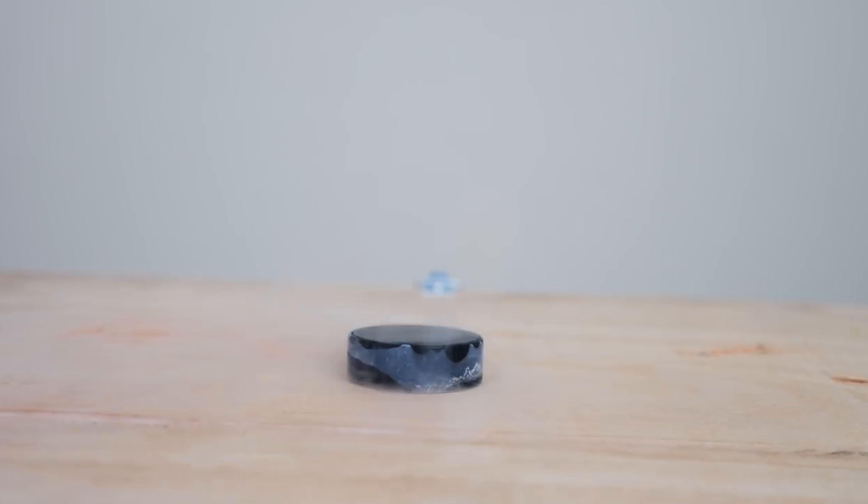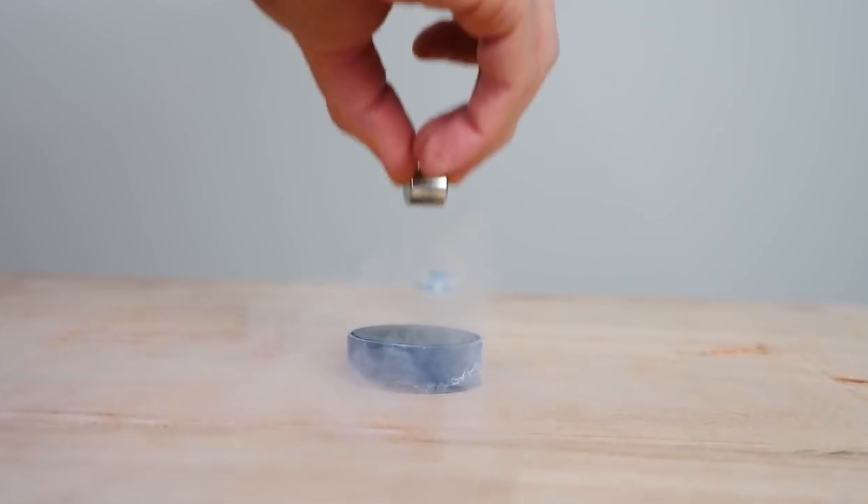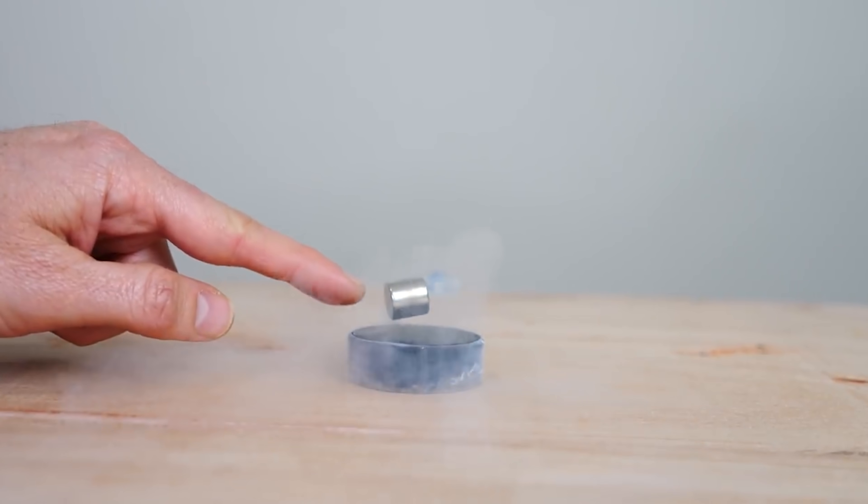Previously I showed you an experiment where I used a type 2 superconductor and cooled it down really cold and then exposed it to a strong magnetic field. In that demonstration, you can actually lock the type 2 superconductor in space so it doesn't completely get attracted and doesn't get repelled, but it locks it wherever you put it.